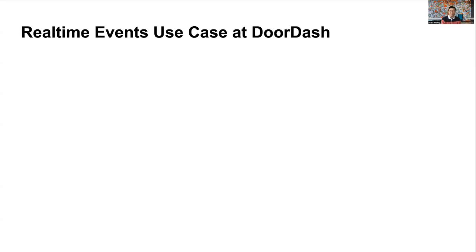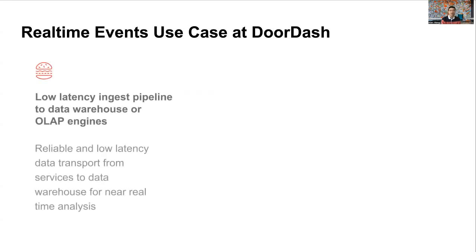First, let's talk about use cases of real-time events. At DoorDash, real-time events are an important data source to gain insight into our business and help us make data-driven decisions. Almost all events need to be reliably transported to our data warehouse Snowflake or other online analytical data stores with low latency for business analysis. For example, the Dasher assignment team relies on assignment events to detect any bugs in their algorithm at near real-time.